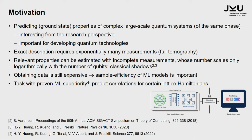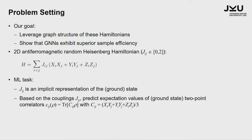Obtaining data is still expensive, so we were interested in whether we can have a sample-efficient machine learning model. For some tasks it is proven that there should be a machine learning superiority — for instance, to predict correlations of lattice Hamiltonians. Our goal was to leverage the graph structure of these Hamiltonians, motivated by taking the physical situation at hand and using graph neural networks, showing that these GNNs exhibit better sample efficiency and need less data to already make good predictions.